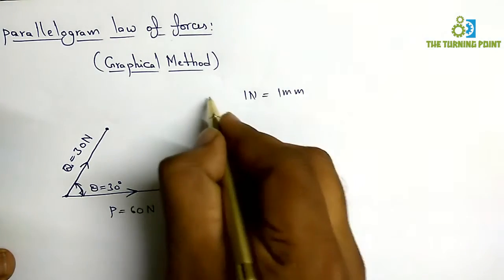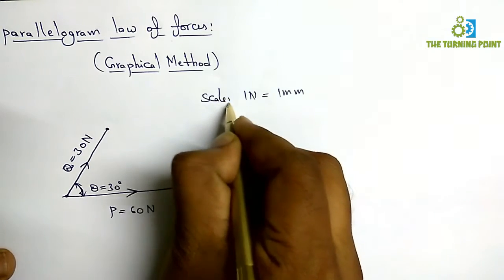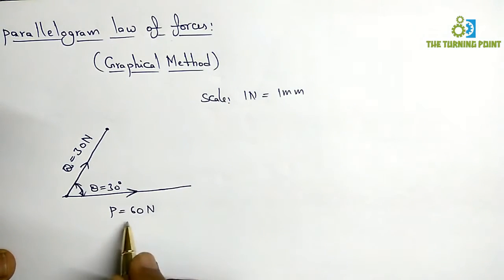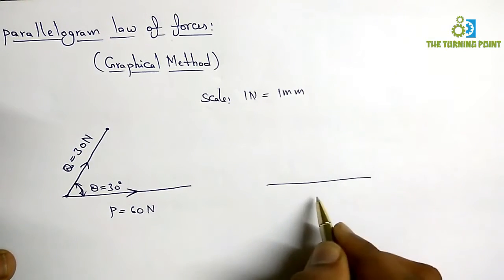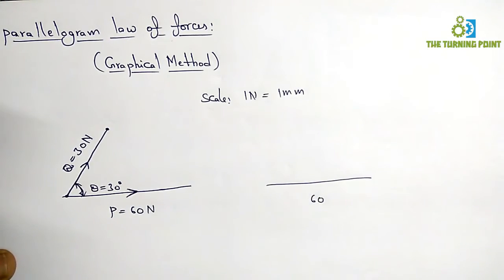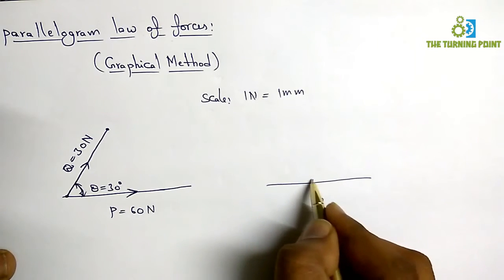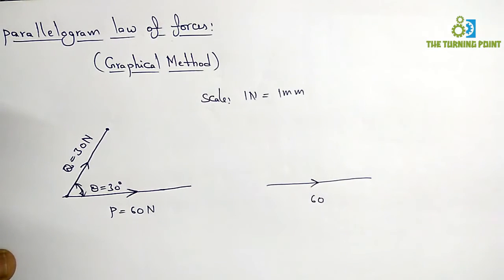So this is the scale I have considered. As per the scale, as it is 60 newtons, I have to draw a line of 60 mm length.